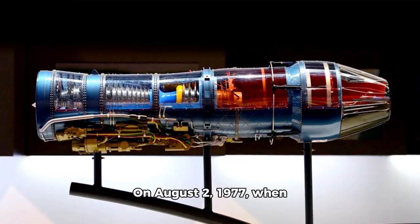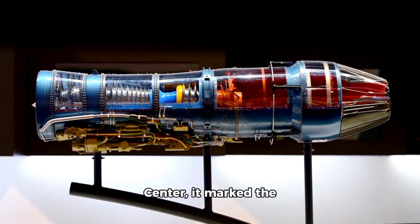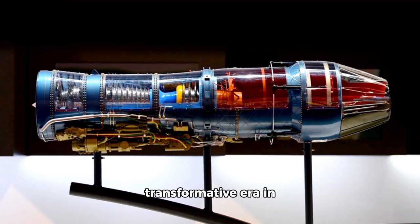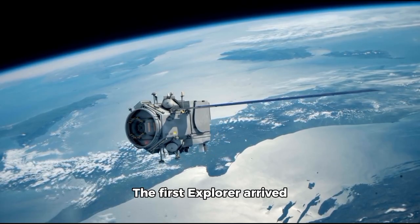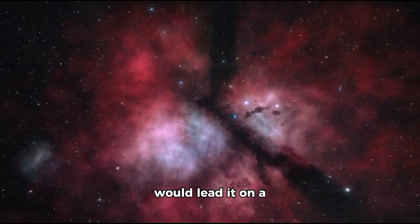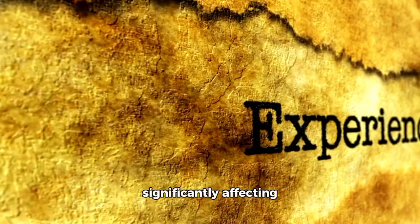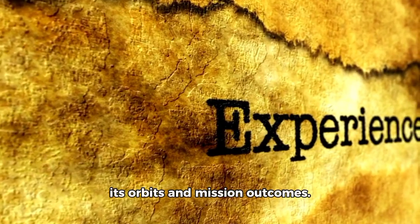On August 2, 1977, when Explorer 2 debuted from NASA's Kennedy Space Center, it marked the beginning of a transformative era in space exploration. The first Explorer arrived on September 5, deciding to follow a path that would lead it on a trajectory toward the outer planets, significantly affecting its orbits and mission outcomes.